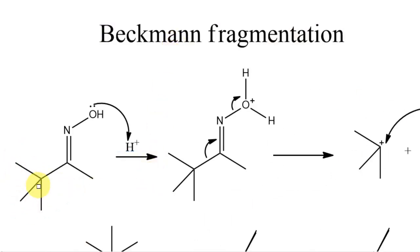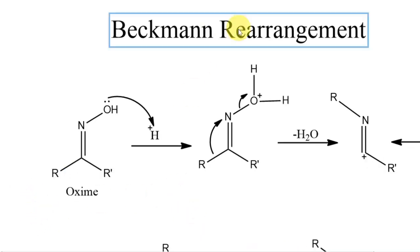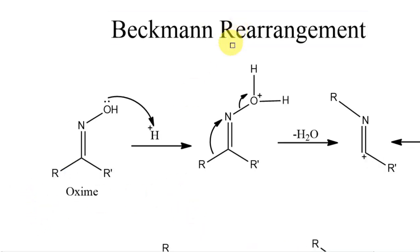Beckman fragmentation can occur with a tertiary butyl group or any group — such as a phenyl group — where the positive charge is well stabilized. Hope you understood Beckman rearrangement and its mechanism. Thank you.